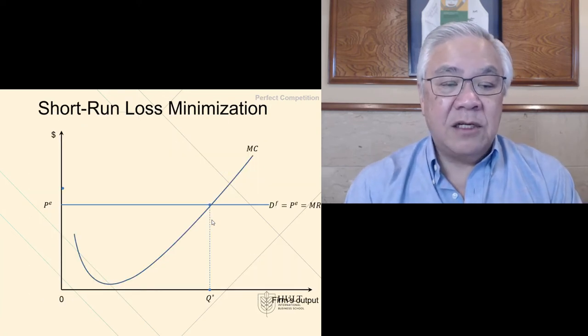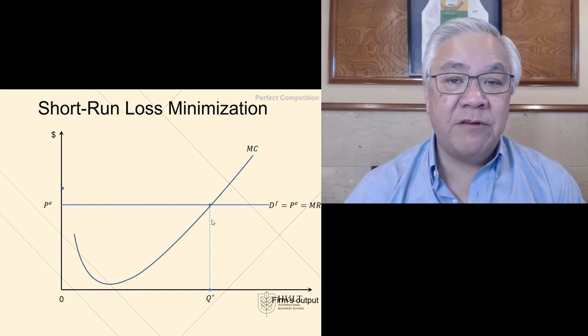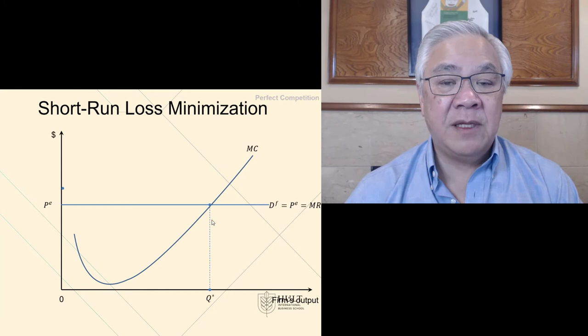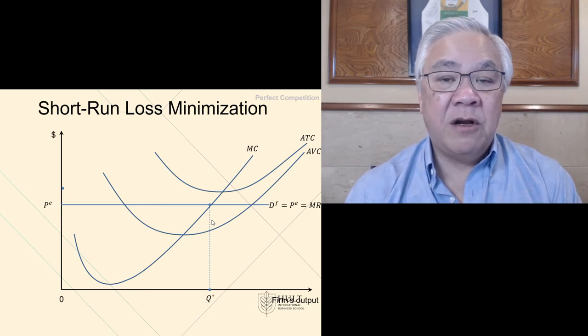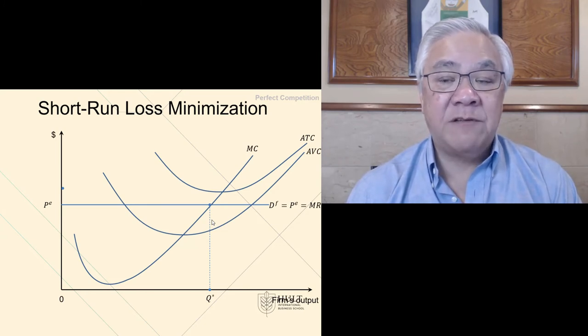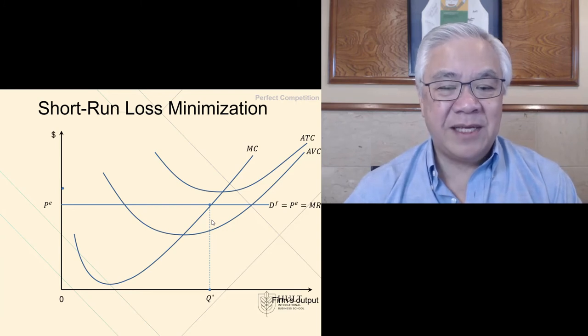We'll next look at short run cost minimization. We've already seen that marginal revenue and marginal cost determine the quantity that we will supply. However, what if we then consider the different positions where the average total cost and the average variable cost may occur? We're going to see something not very pleasant here.